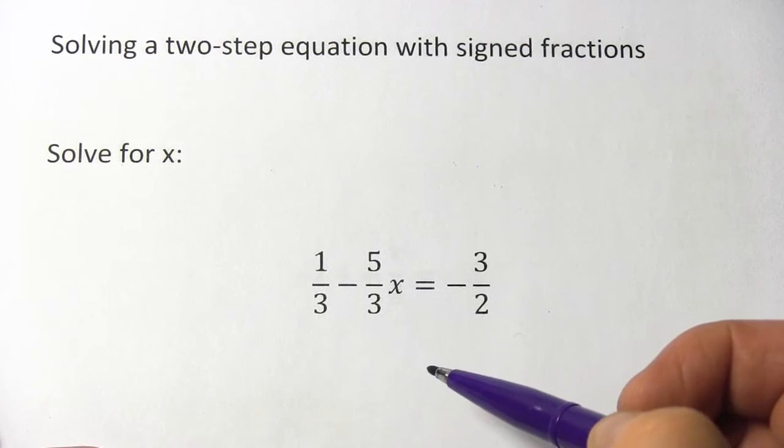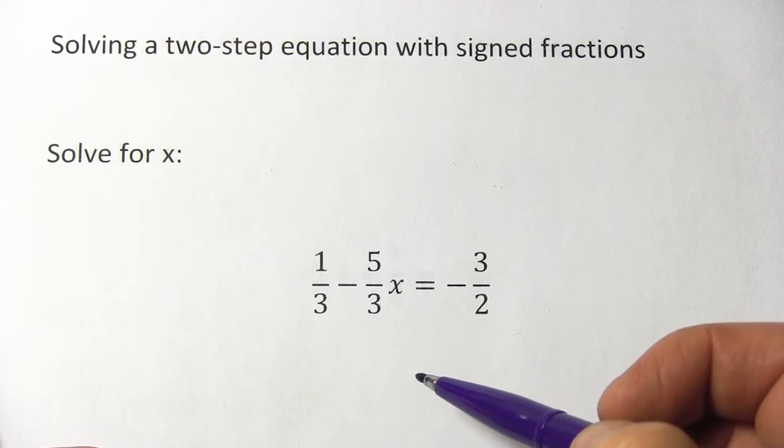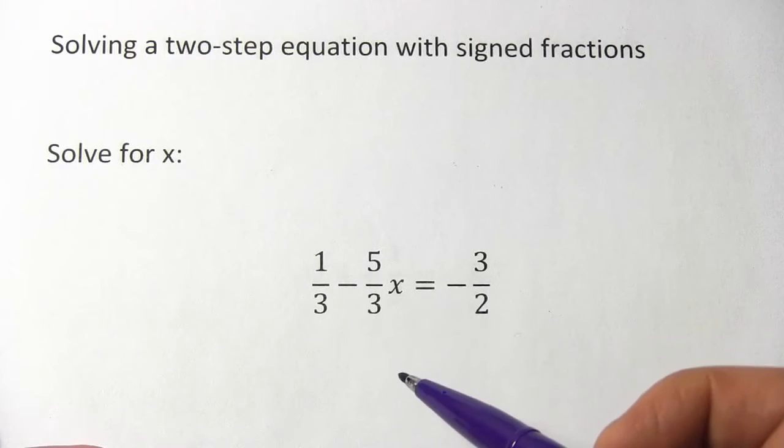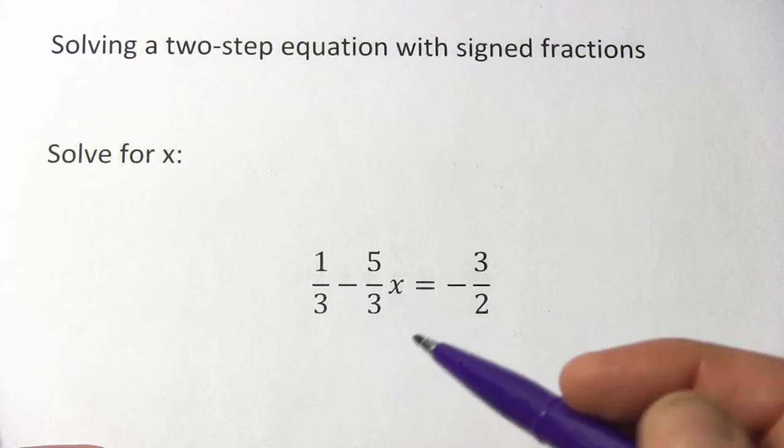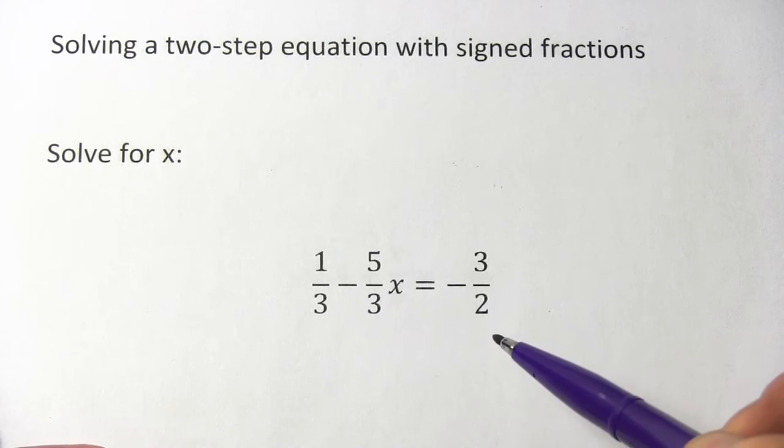I would recommend getting rid of all the fractions first and then solving the equation. The way we're going to get rid of these fractions is by multiplying everything by the same number, by a number that's big enough to cancel out with these fractions.